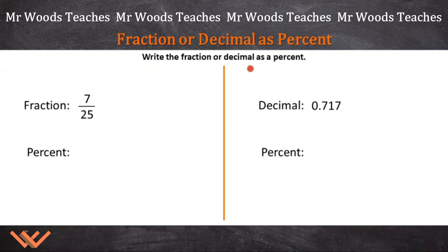When you approach a problem, always look for the direction. It says write the fraction or decimal as a percent. We have a fraction here and we have a decimal here. But this doesn't have a hundred down below.